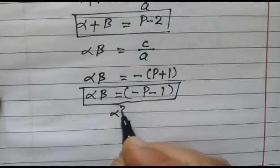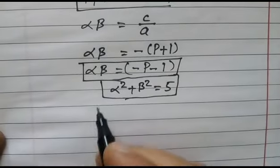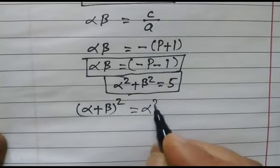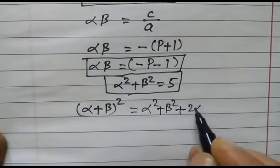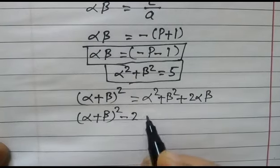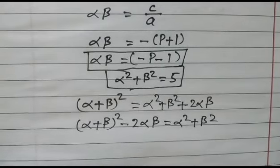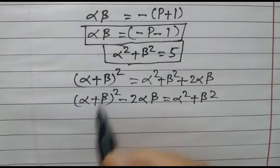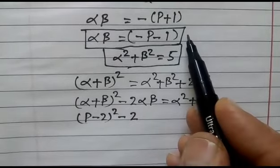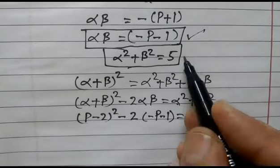We have also been given that alpha² + beta² = 5. Now, (alpha + beta)² = alpha² + 2·alpha·beta + beta². Substituting: alpha + beta is (p-2), so (p-2)² - 2·alpha·beta, and alpha·beta is -(p+1), so (p-2)² - 2·(-(p+1)) = alpha² + beta² = 5.